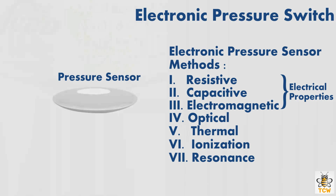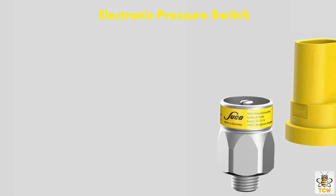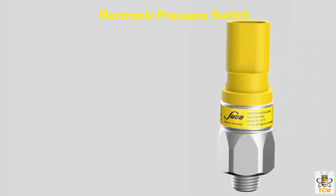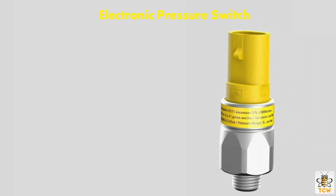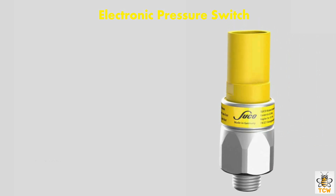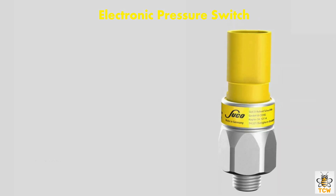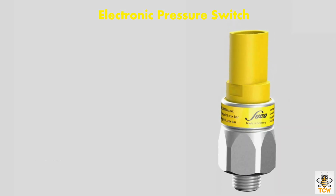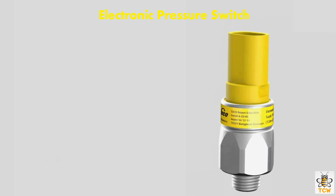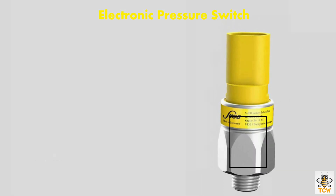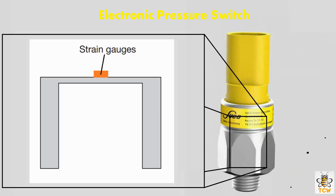Next, we will explain the easiest method to understand: the resistive method using a strain gauge. Inside the electronic pressure switch using the resistive method, the spring and piston components of the mechanical pressure switch are replaced by a flexible surface on which the strain gauge is attached.